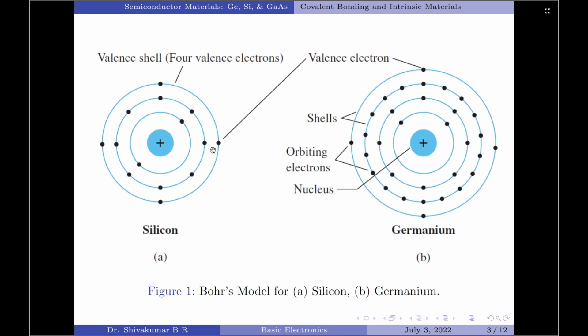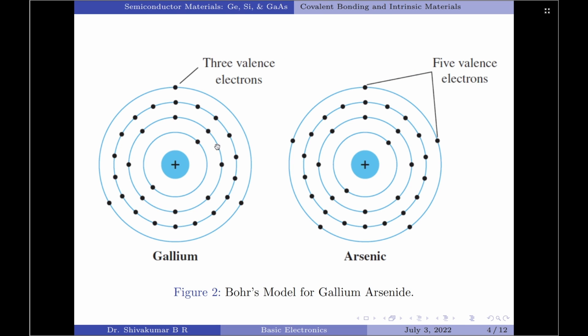Please note: atoms that have 4 valence electrons are called tetravalent. Those with 3 valence electrons are called trivalent, and those with 5 valence electrons are called pentavalent.